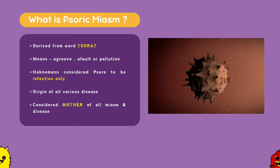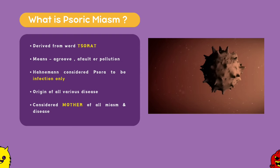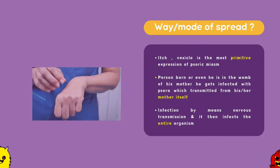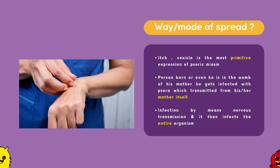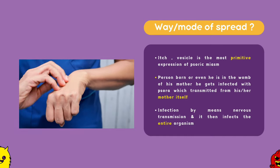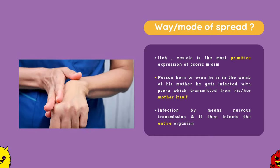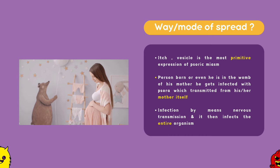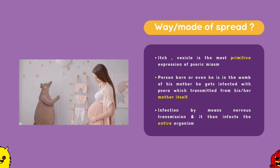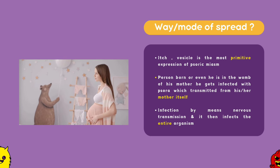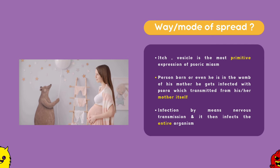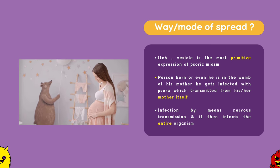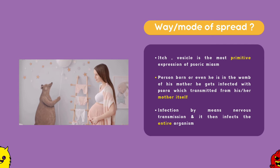Since Hahnemann considers it as an infection, he also describes the mode of its spread. According to Hahnemann, each vesicle is the most primitive expression of the Psoric Miasm, and the fluid secretions present in this vesicle contain the root of the Psoric Miasm. He says that whenever a person is born, or even when in the womb of the mother, they get infected with Psora as a Miasm transmitted from the mother. Even if they somehow don't catch the infection in the womb, they acquire it immediately after birth from various other sources. The nerve first sensitized by the Psoric Miasm transmits it to the rest of the body by nervous transmission, infecting the entire organism slowly and continuously.